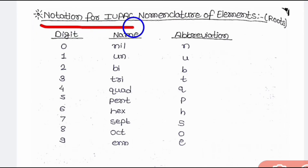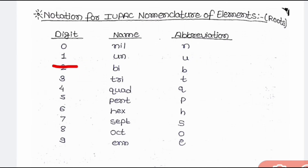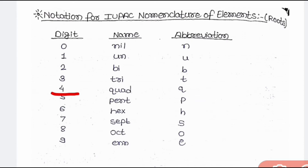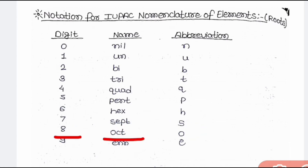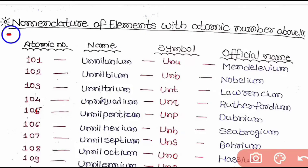Now let us come to the notation for IUPAC nomenclature of elements. The digit names and abbreviations are as follows: digit 0 — nil (n); digit 1 — un (u); digit 2 — bi (b); digit 3 — tri (t); digit 4 — quad (q); digit 5 — pent (p); digit 6 — hex (h); digit 7 — sept (s); digit 8 — oct (o).